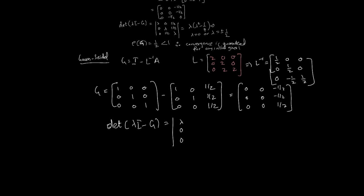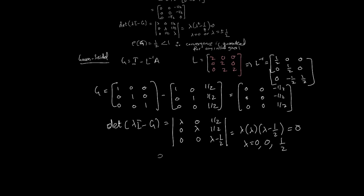The characteristic equation for the Gauss-Seidel G matrix reduces to lambda times (lambda) times (lambda minus 1/2) equals 0, which means lambda equals 0, 0, and 1/2 are the three eigenvalues. The spectral radius of G is therefore 1/2, which is also less than 1, so convergence is guaranteed for any initial guess.